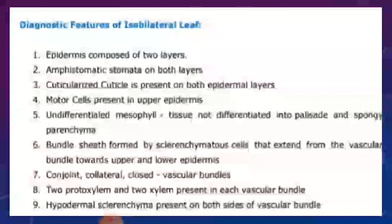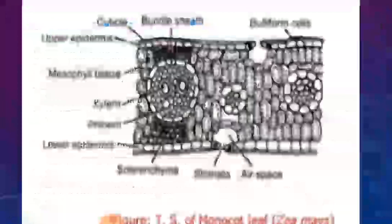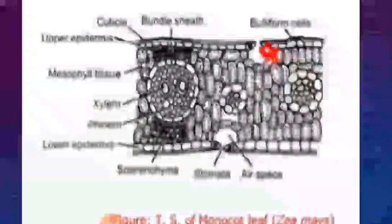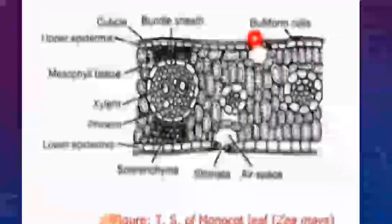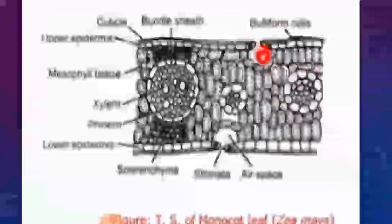The stomata are amphistomatic, meaning they are present on both epidermis layers. Stomata are pores or passages where the exchange of gases takes place. These stomata are present on both the upper as well as the lower epidermis.